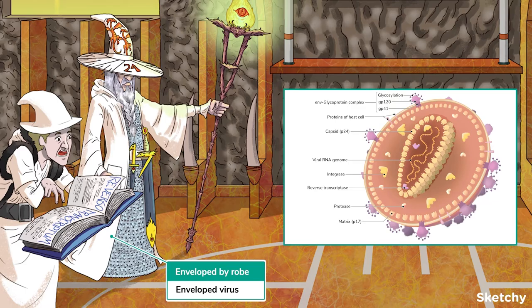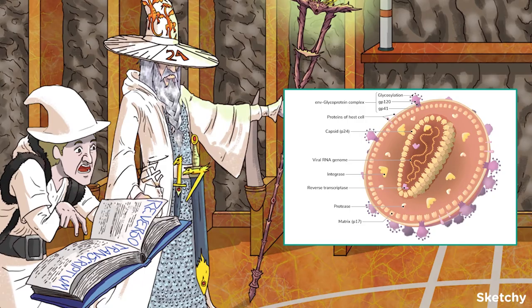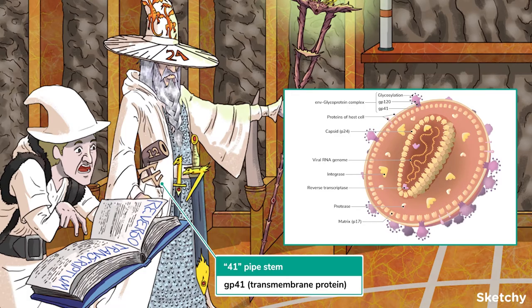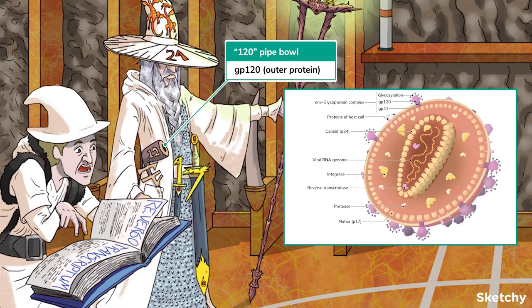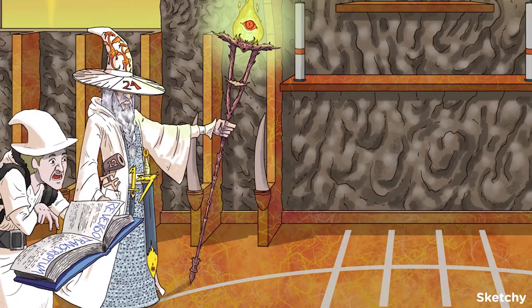Directly overlying the P17 protein shell is the envelope. The envelope is composed of a lipid bilayer studded with glycoproteins. These ENV proteins, or envelope glycoproteins, are actually complexes of two glycoproteins: GP41 and GP120. Both exist as trimers, or triplicate polymers. We'll represent both glycoproteins with the wizard's pipe. GP41 is a transmembrane protein, with 41 on the stem or mouthpiece of the pipe — the stem reaching deep into the wizard's enveloping robe pocket, just like a transmembrane protein extends deep into the membrane. GP120 is the outer glycoprotein that will eventually come in contact with host receptors, incorporated into the bowl of the pipe.